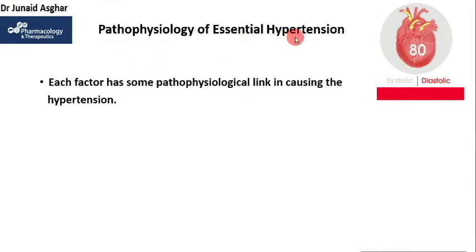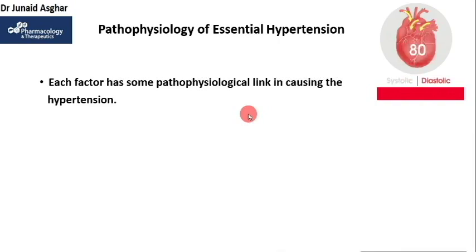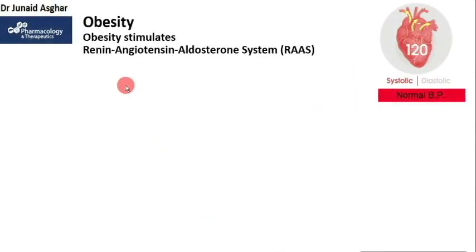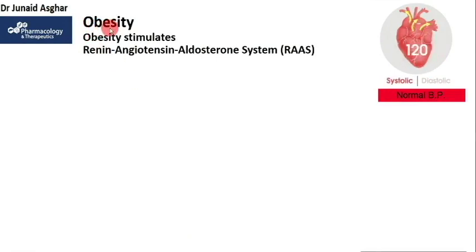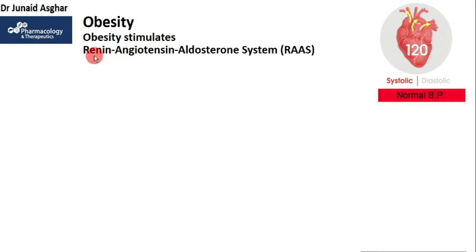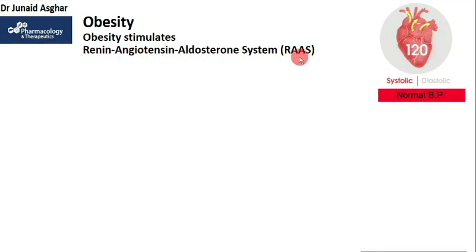Pathophysiology of essential hypertension: each factor discussed has a pathophysiological link to essential hypertension. Starting with obesity — hypertension is linked to obesity in many ways. Obesity may lead to hypertension and cardiovascular diseases by activating the well-known renin-angiotensin-aldosterone system, or RAS, which is responsible for blood pressure regulation. Obesity also promotes endothelial dysfunction and insulin resistance, which we shall discuss later. Research shows that obesity increases renin secretion from the kidney.